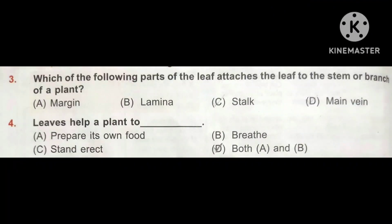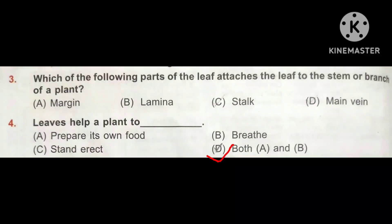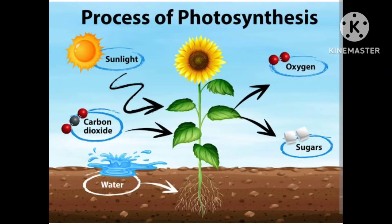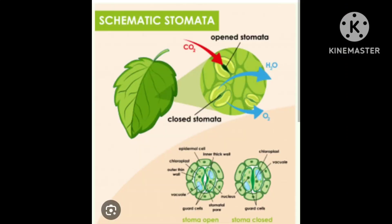Question number 4. Leaves help a plant to... Option A: Prepare its own food. Option B: Breathe. Option C: Stand erect. Option D: Both A and B. Here both options — prepare its food and breathe — are correct. Plants prepare their food by the process of photosynthesis, using sunlight, carbon dioxide, and water; sugar is formed in leaves and oxygen is released into the atmosphere. Plants breathe through stomata, which are tiny pores present on leaves through which plants exchange gases CO2 and O2.